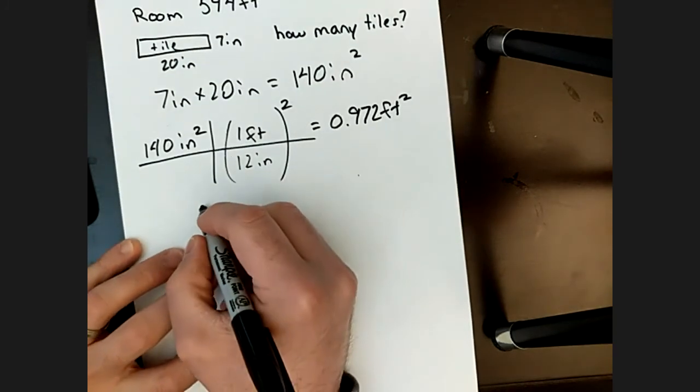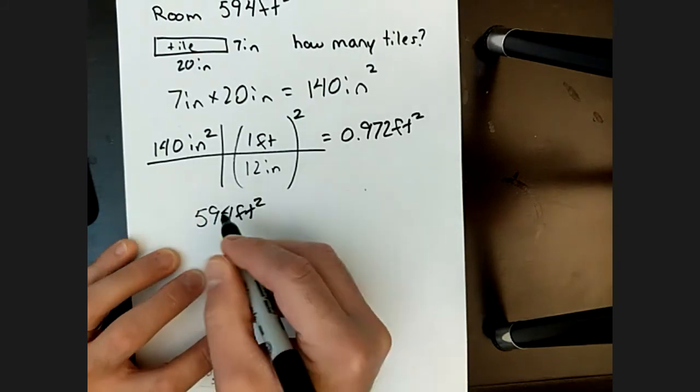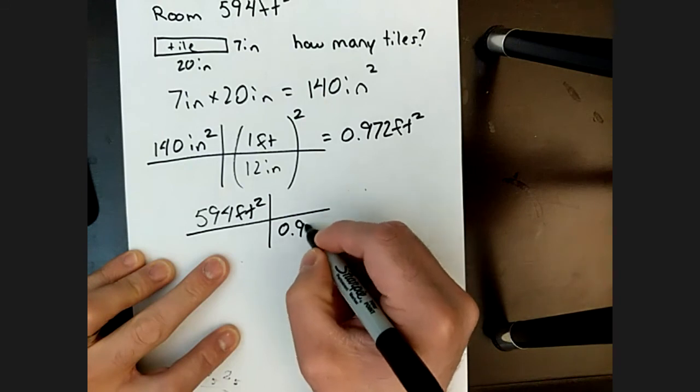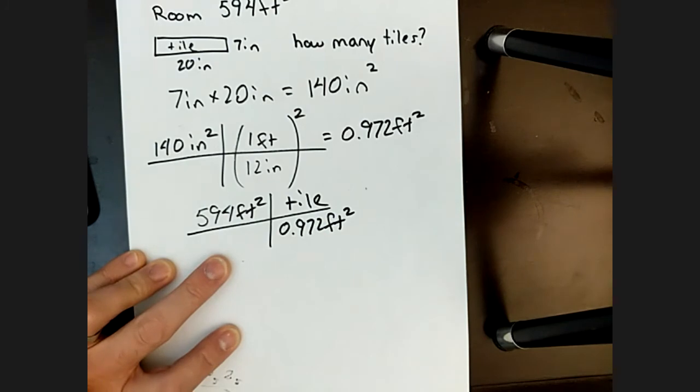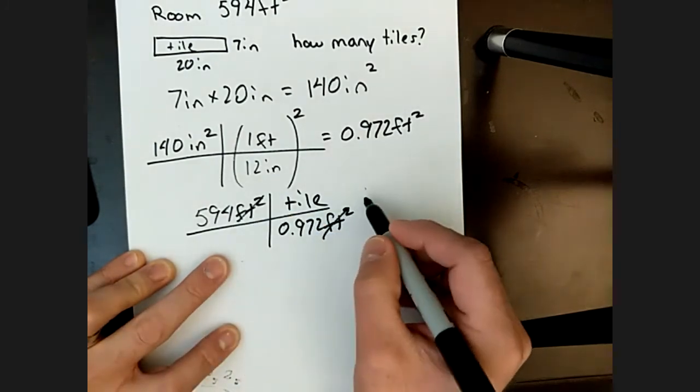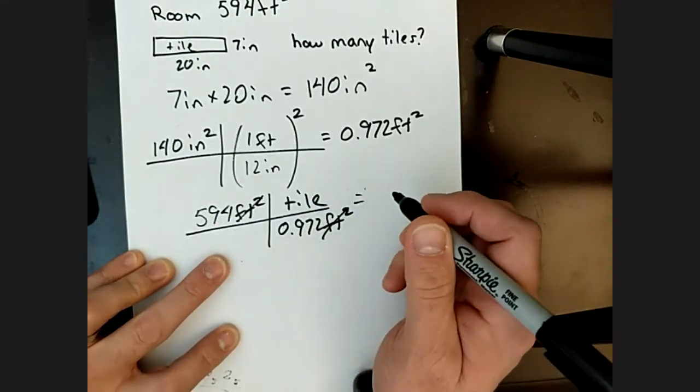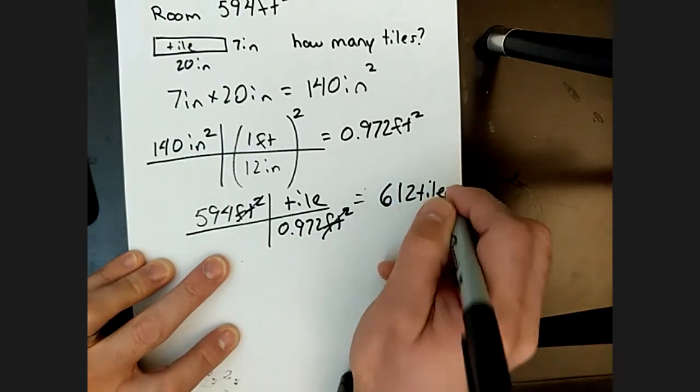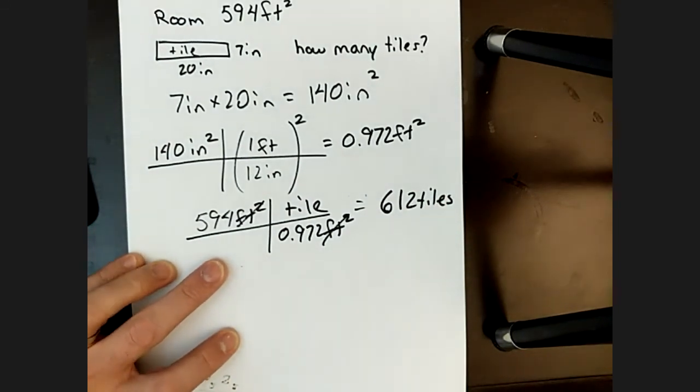So then if my room is 594 square feet and there are 0.972 square feet per tile, square feet go away, leaving how many tiles would that be? And in this case, you would round it off because you're not buying portions of a tile. So you'd end up with 612 tiles.